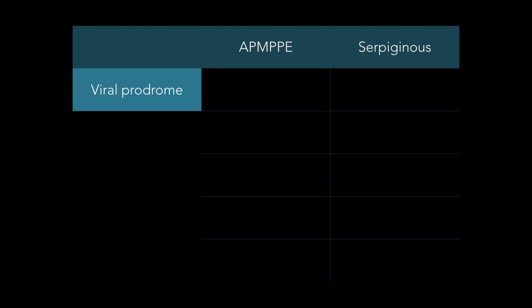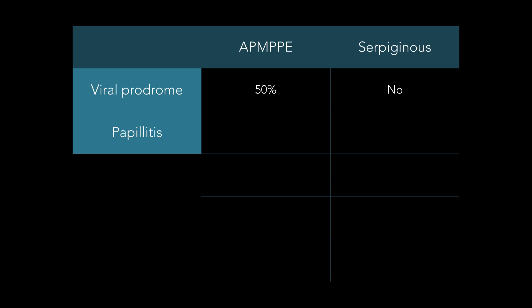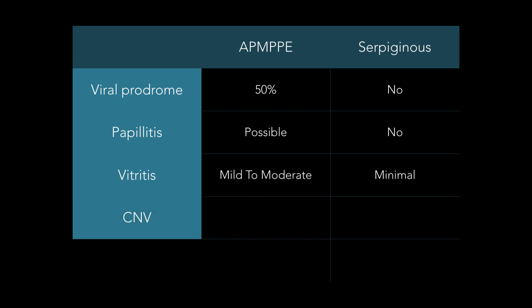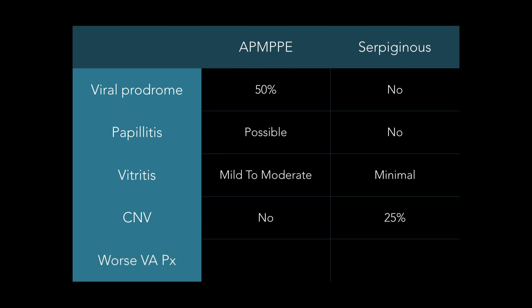Second quiz: AMPPE versus serpiginous. Which one has the viral prodrome? Right, 50% — serpiginous, no. Papillitis? Nope. AMPPE can have some optic disc edema. Vitritis — which one? Both can have some; AMPPE might be a little more likely. Again, you're not really going to mix these two up usually. CNV — I say no to serpiginous. Classically, AMPPE does not have CNV. Worst visual prognosis? Therefore, we use IMT in serpiginous and not AMPPE.